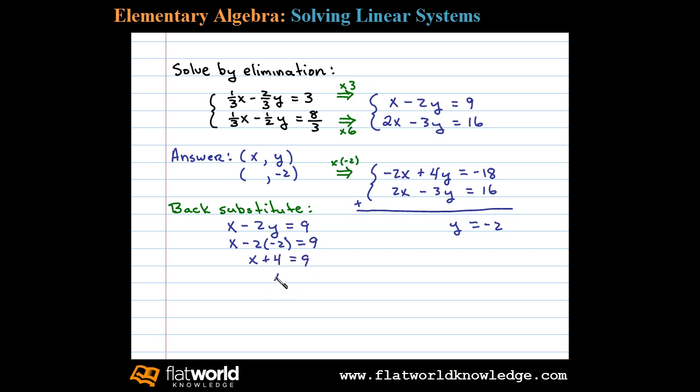So the ordered pair solution to the system is 5 comma negative 2.